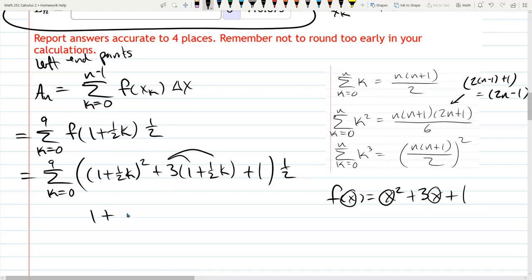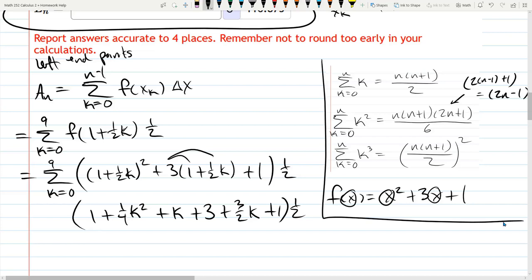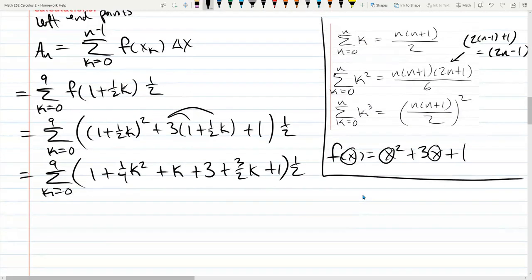So 1 times 1 is 1. 1 half K times 1 half K is 1 fourth K squared. And the outside inside, so we have 1 times 1 half K plus 1 times 1 half K is just K. So I FOIL this and distribute 3 times 1 is 3 plus 3 halves K plus 1 times 1 half. Still have summation K equals 0 to 9. We need to combine terms here.